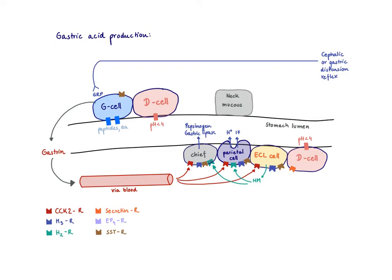So gastrin acts as a hormone, as an endocrine factor. There are gastrin receptors, which are called CCK2 receptors, on the parietal cell. Once they are stimulated, you start making some acid.